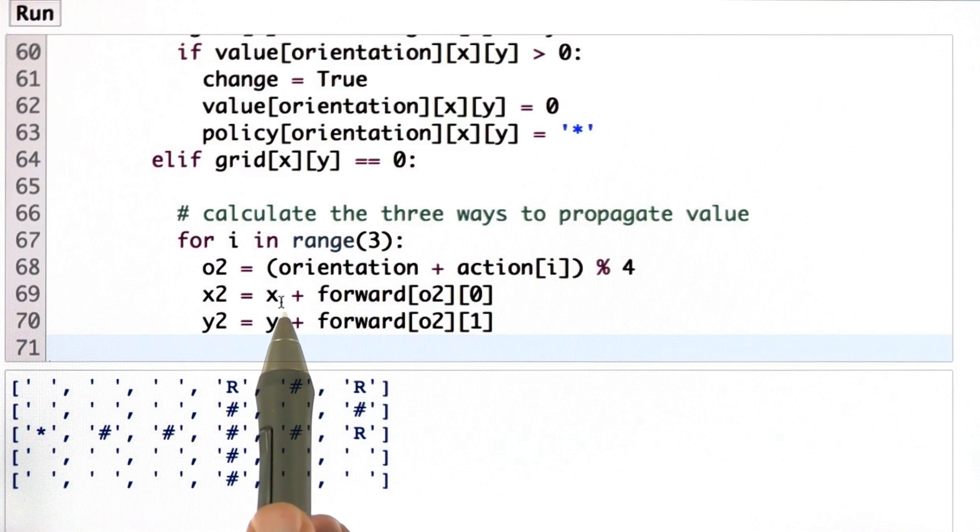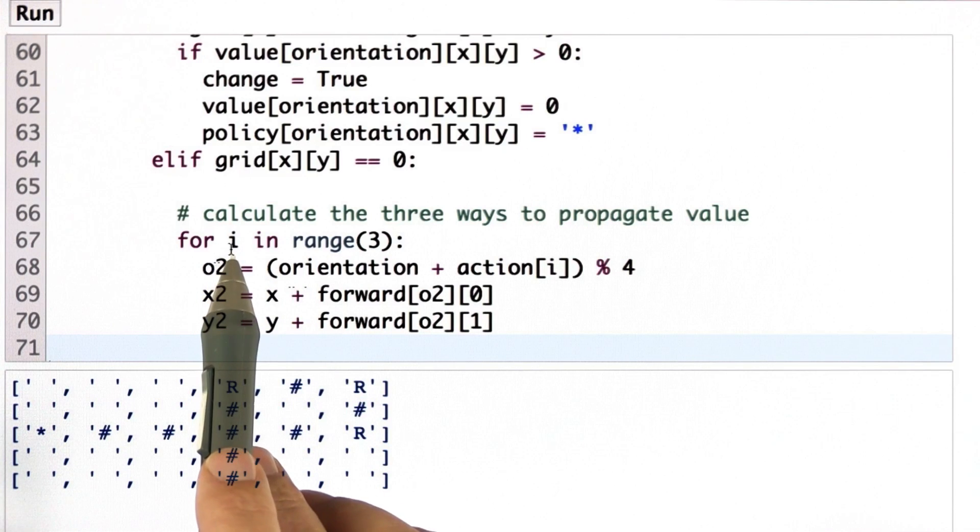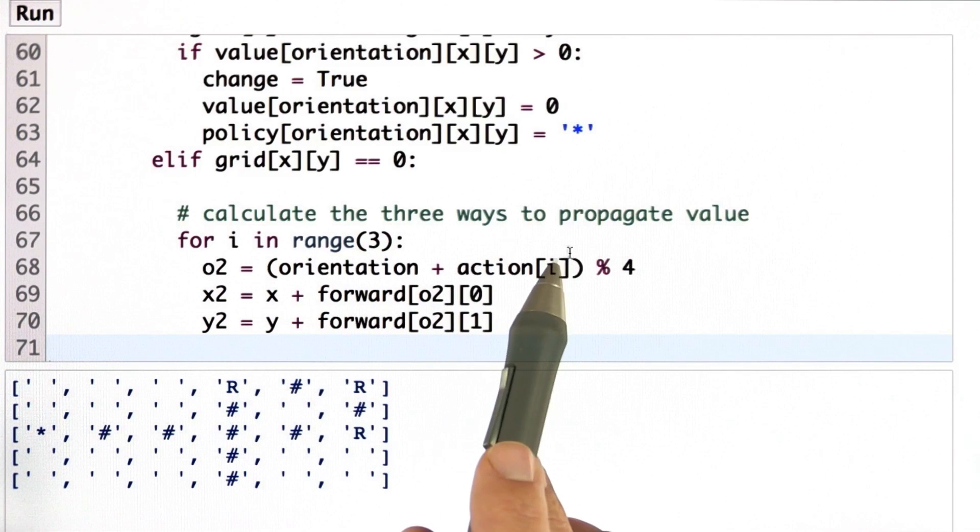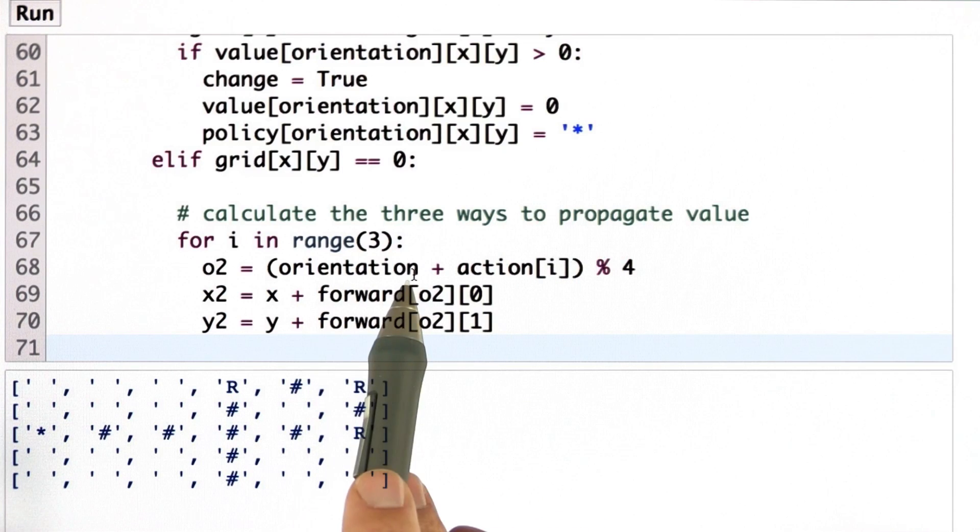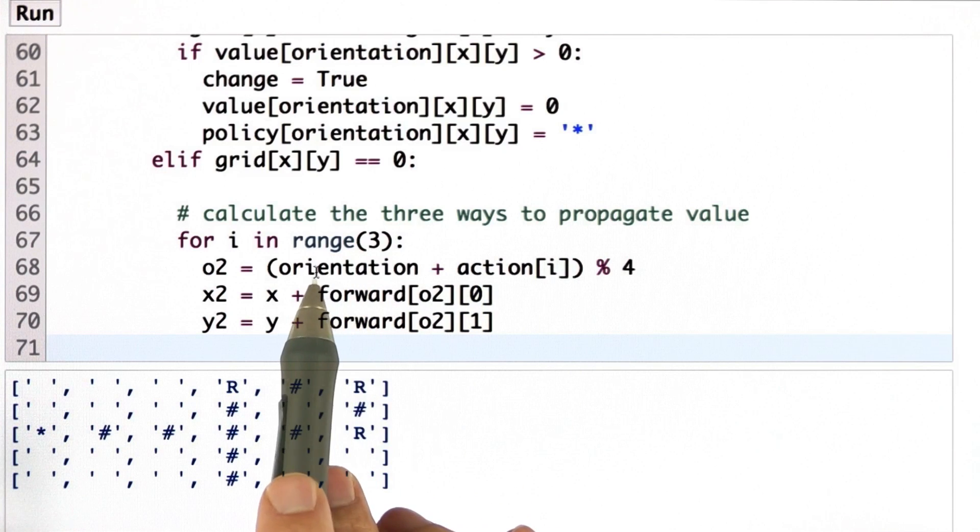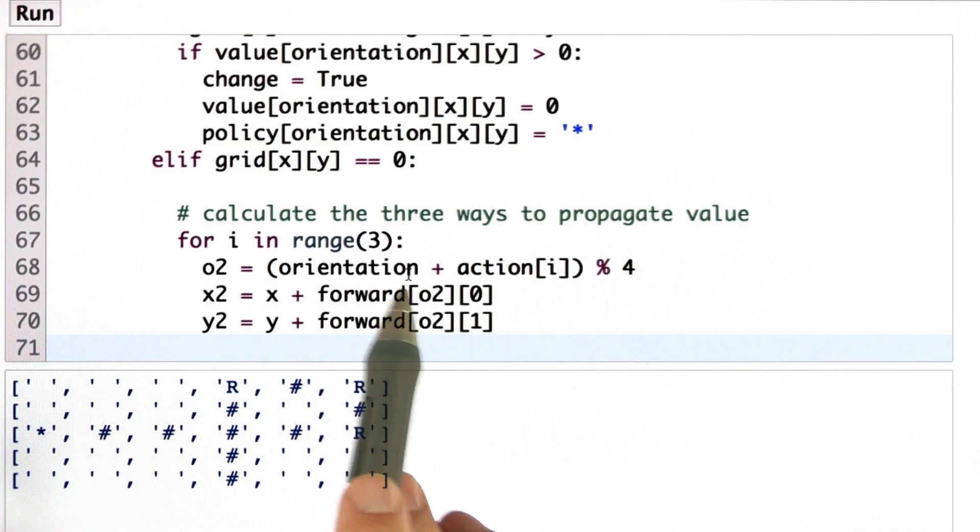And here's a tricky part how to make the action work, but it works beautifully. We go through three different actions. When we take the ith action, we add the corresponding orientation change to orientation modulo 4. It's a circling buffer. So this might subtract one, keep it the same, or add one to orientation.